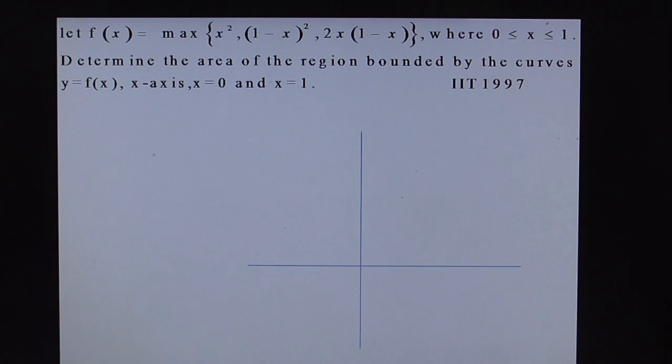Just observe the graphs x axis y axis. This is origin then what is this curve? This is y equal to x square. Now the second curve, this is 2x of 1 minus x.